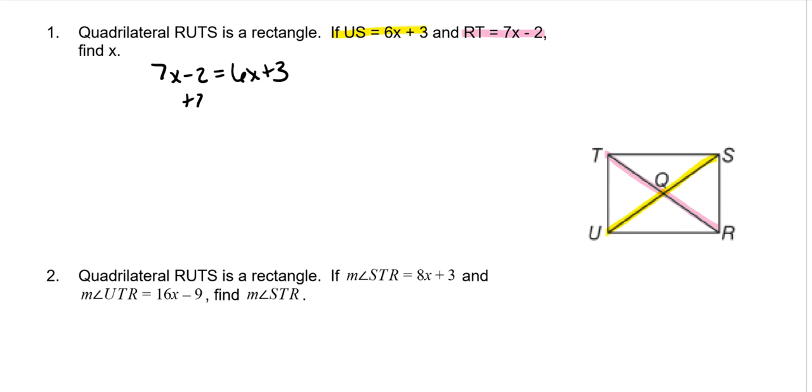Add two to both sides. Subtract 6x from both sides. And x is five.